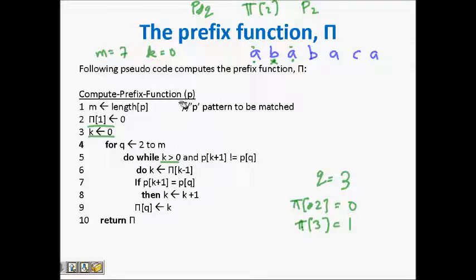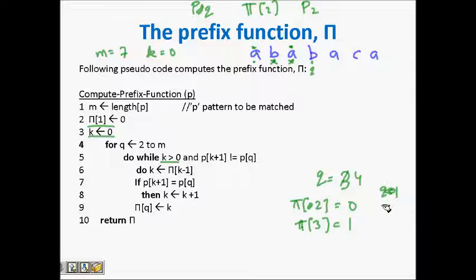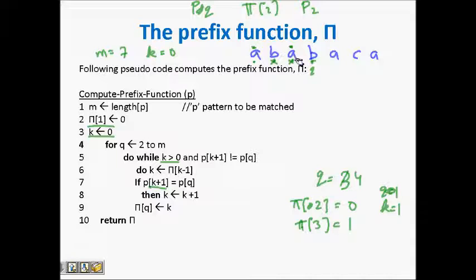q becomes four. We already know that this 'a' and this 'a' are matching. To find if this prefix can extend, since k is one and k is greater than zero, we check p[k+1]. In pattern 'a b', is this 'b' matching p[q]? Yes — 'a b' matches. So now I know a prefix of length two will be here. π[4] becomes two.